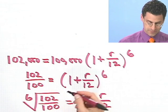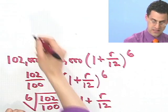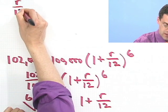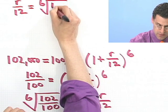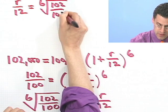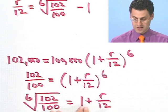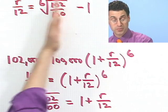In fact, let me do that here first. So if I were to bring the 1 over, I'd see that R over 12 would equal the sixth root of 102 over 100, and then all minus 1. That's the minus 1 part.